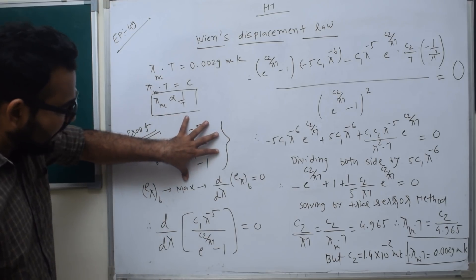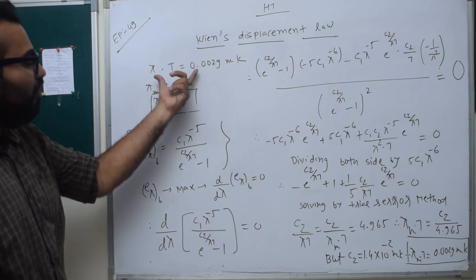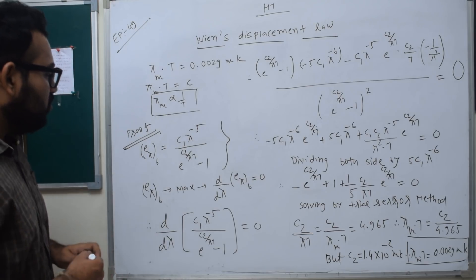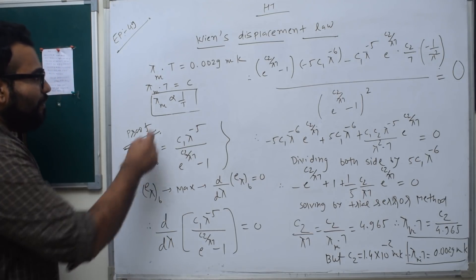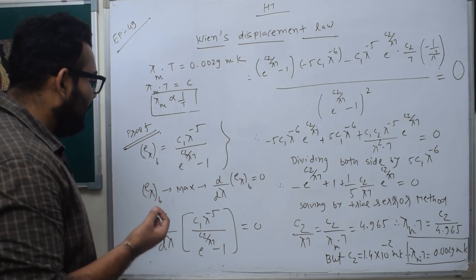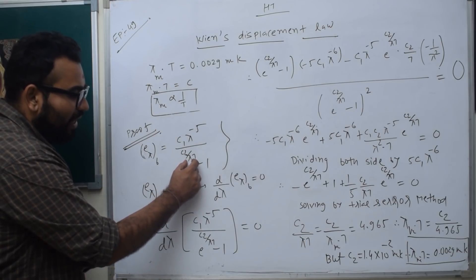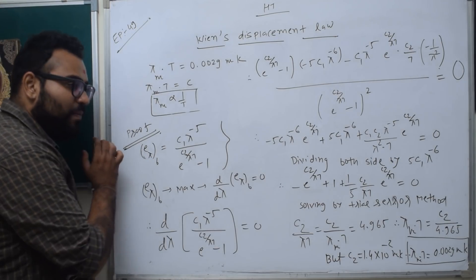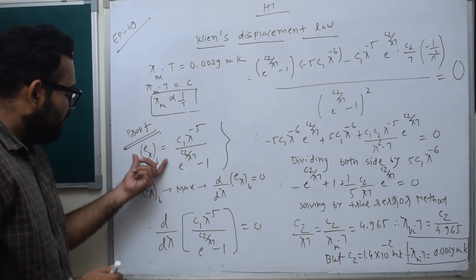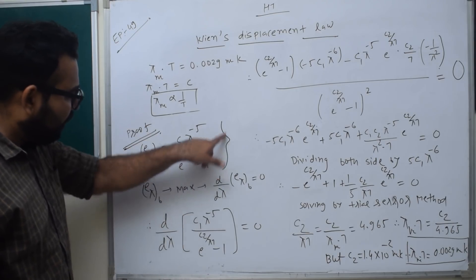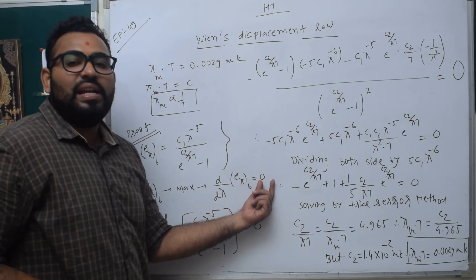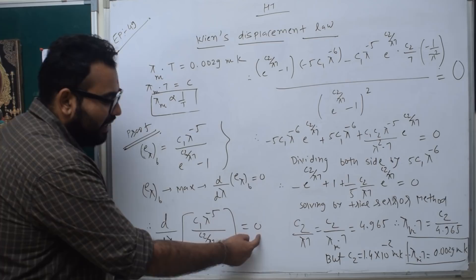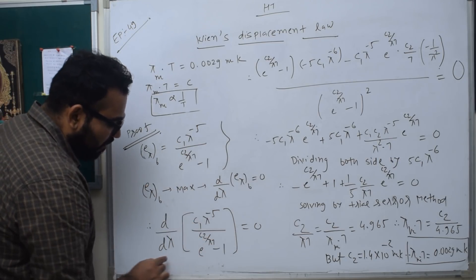So we have Planck's equation. We have to first use this Planck's equation, and we have to derive the answer. To find the maximum wavelength, we take the differentiation of the spectral power equation with respect to λ and equate it to zero.